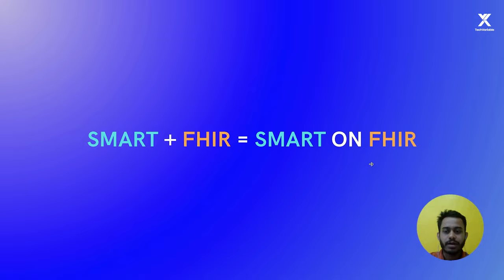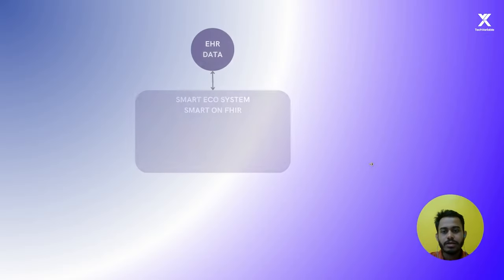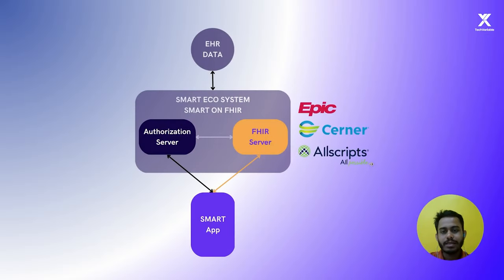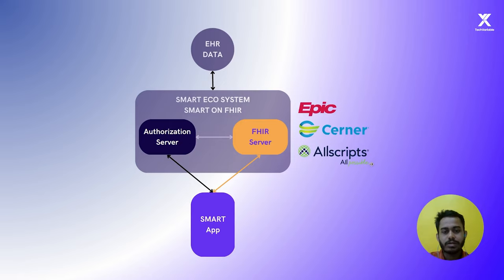SMART on FHIR is not only about the data model — it's actually an ecosystem. In this ecosystem, you have an authorization server, a FHIR server connected with the EHR data, and your application connects to both the authorization server and the FHIR server. This ecosystem is supported by many EHR vendors such as Epic, Cerner, Allscripts, and many others that support the SMART ecosystem.